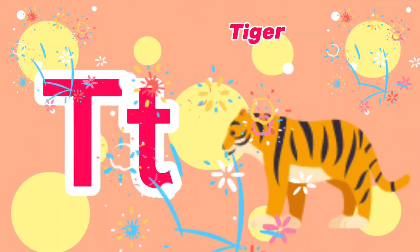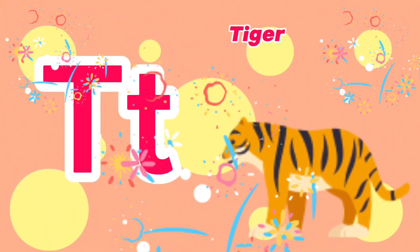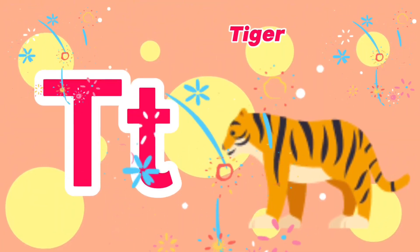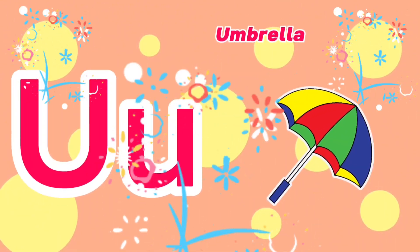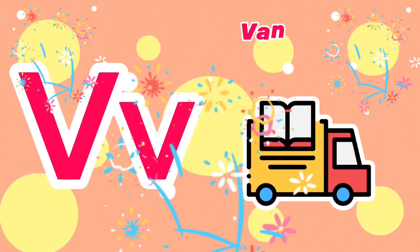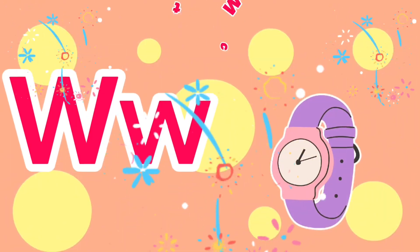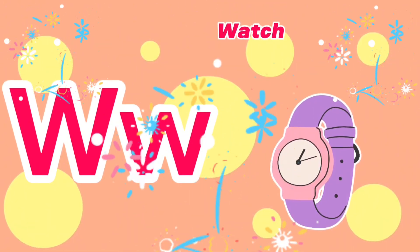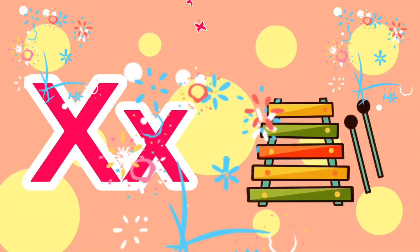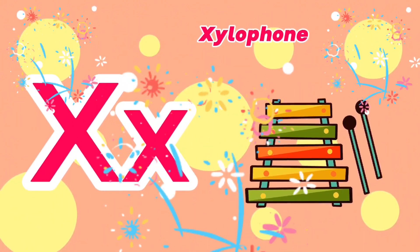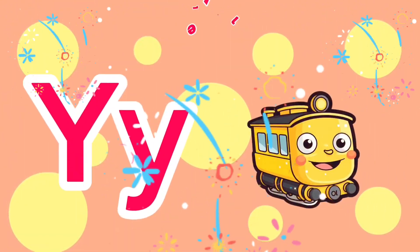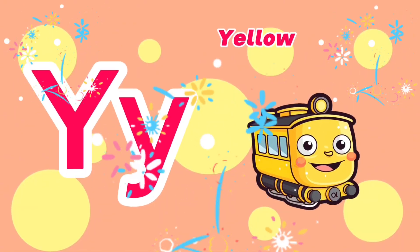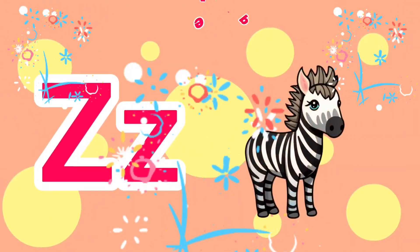T is for Tiger. U is for Umbrella. V is for Van. W is for Watch. X is for Xylophone. Y is for Yellow. Z is for Zebra.